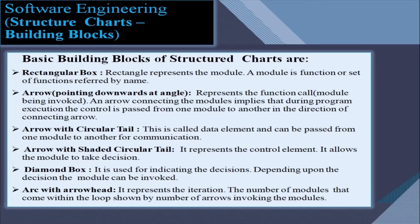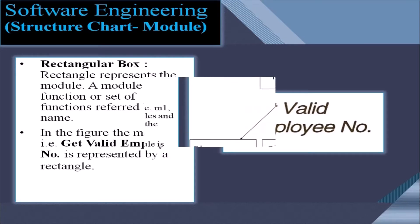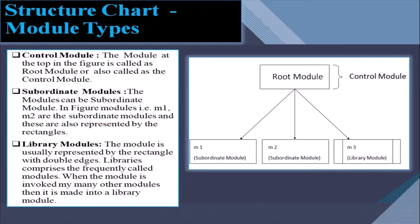All these building blocks or symbols of structure charts are now discussed in detail. First is the rectangular box. A module is represented by a rectangle. A module is a function or set of functions referred to by name. For example, the module 'get valid employee number' is represented by a rectangle.